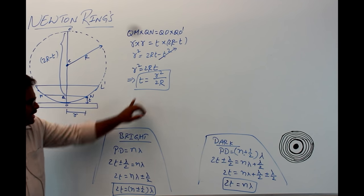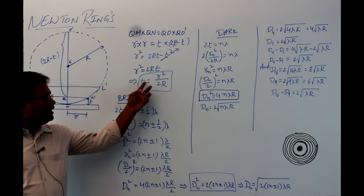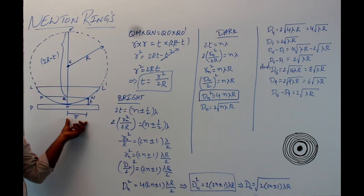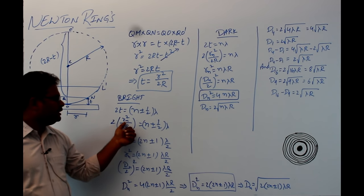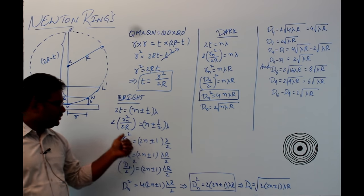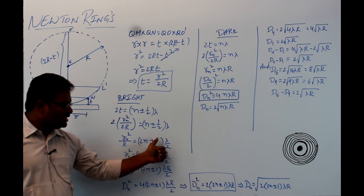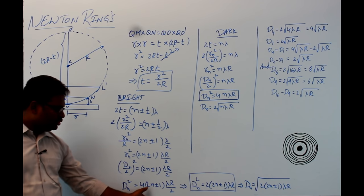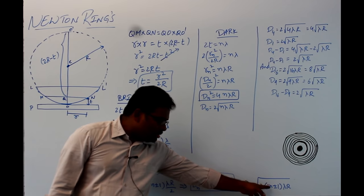Substituting t = rₙ²/2R into the bright fringe condition 2t = (n ± 1/2)lambda, we get rₙ²/R = (2n ± 1)λ/2, giving rₙ² = (2n ± 1)λR/2. Since diameter D = 2r, we get Dₙ² = 2(2n ± 1)λR, and therefore Dₙ = √[2(2n ± 1)λR]. This is the diameter expression for bright rings.